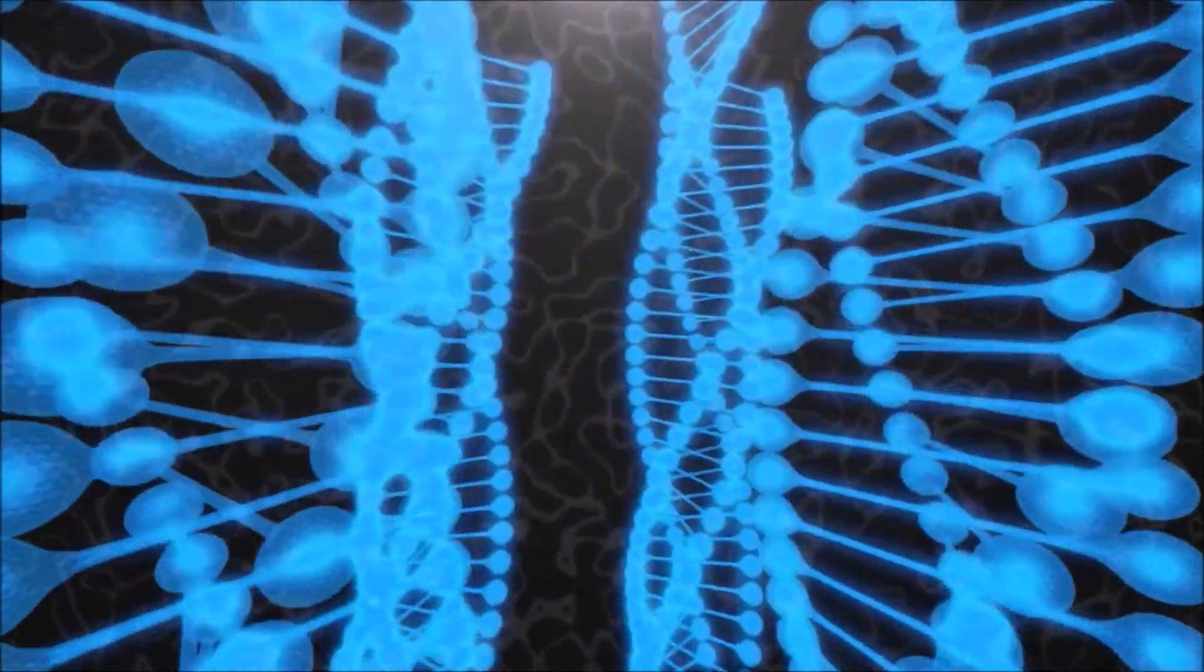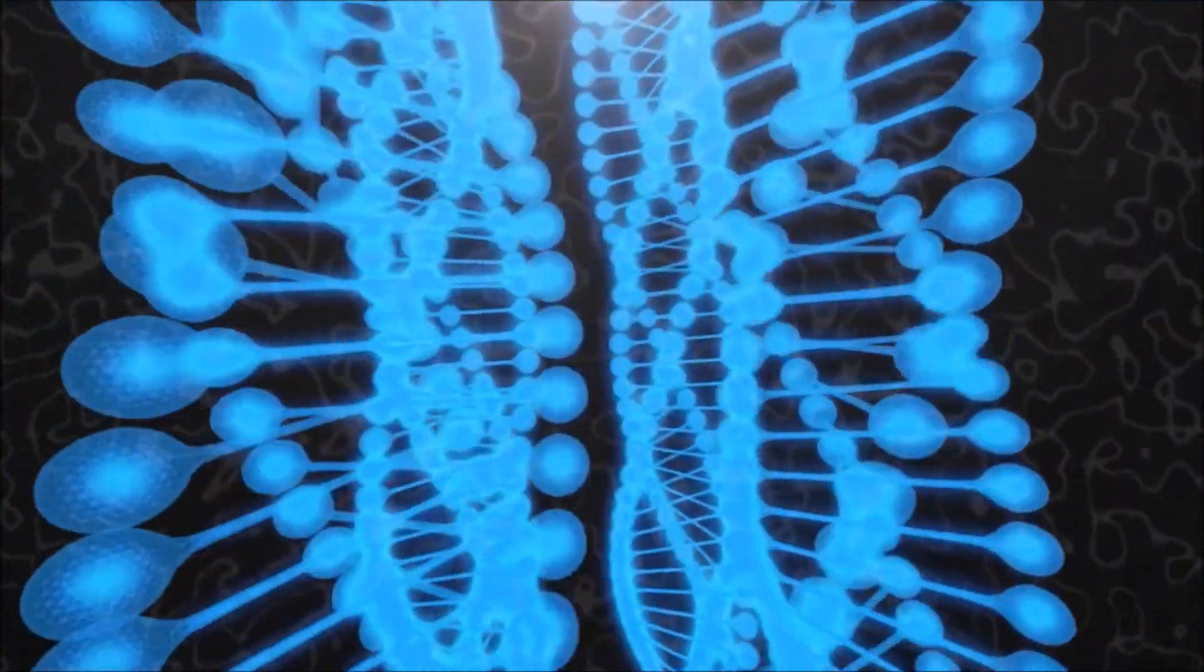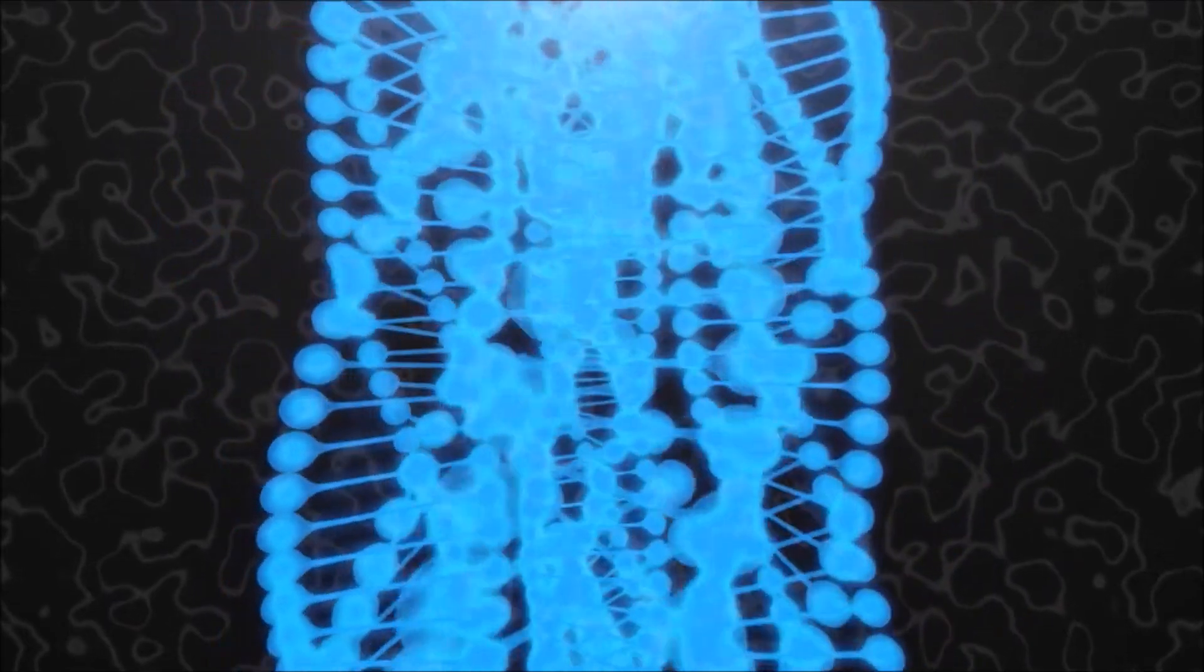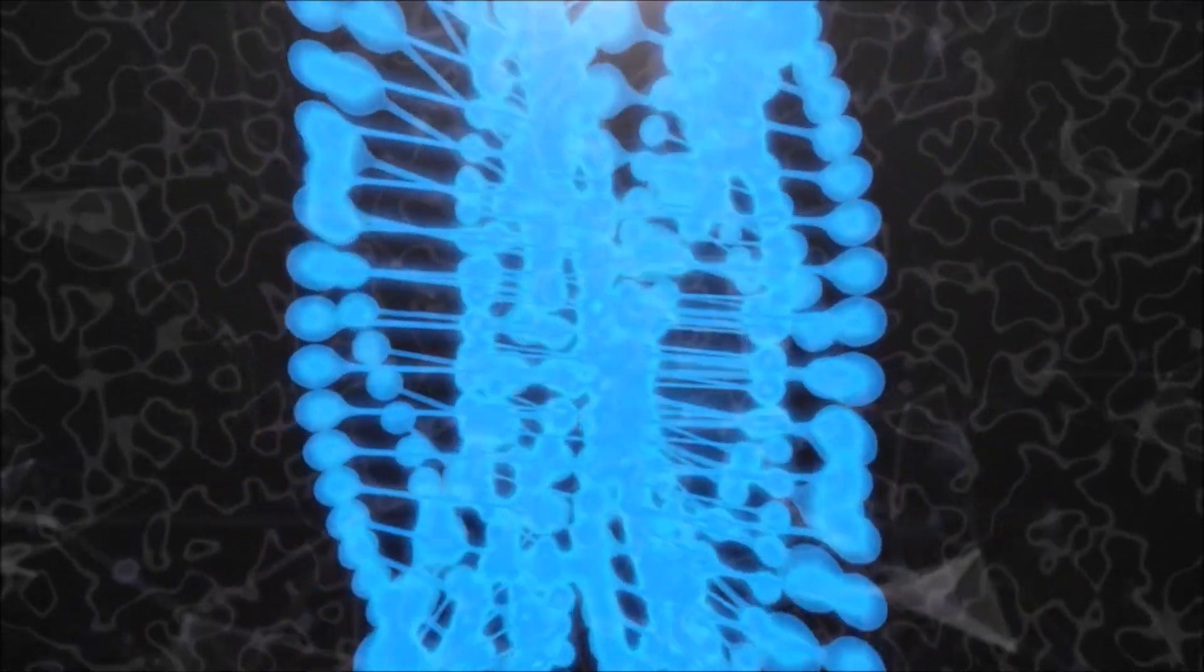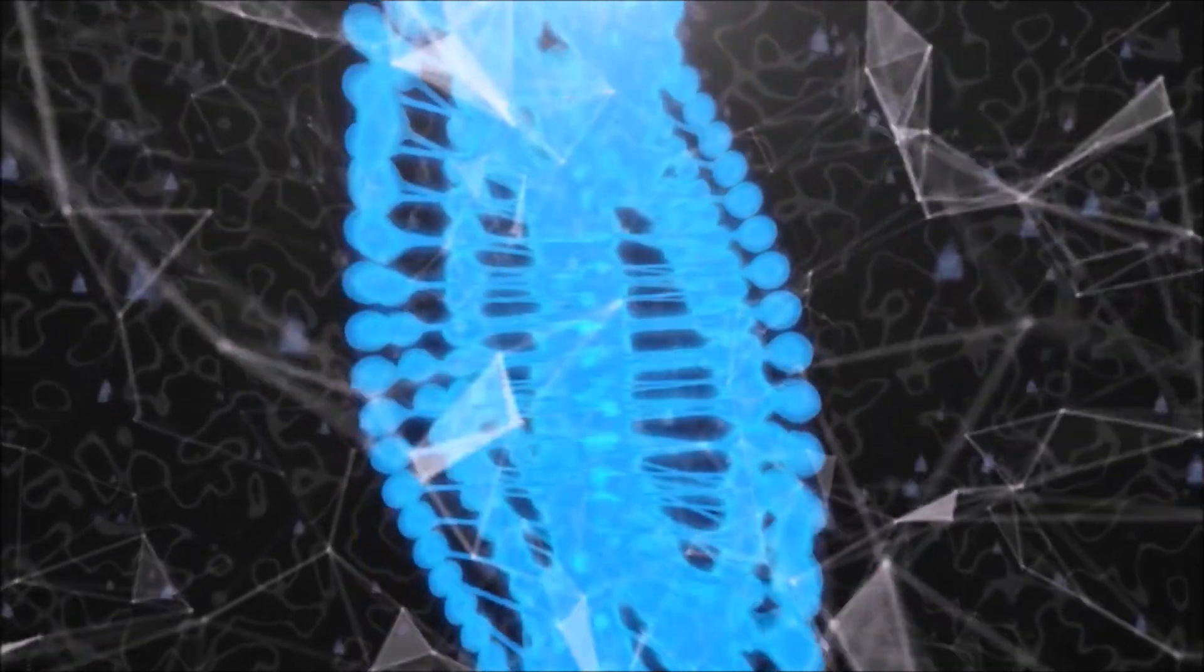Only when the cell needs to reproduce through mitosis do the chromosomes condense into a neat spool. This structure then provides a durable and functional form that allows the DNA to split evenly.